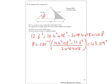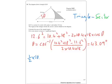So I've got to do the area of the triangle minus the sector. The triangle is going to be a half times 10.4 times 18 times sine of 43.09.